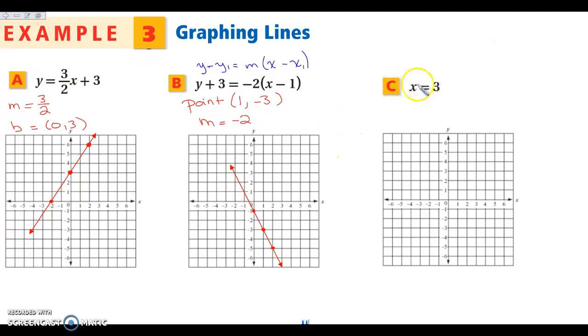Then let's look at C. We have x equals 3. That means every x value on this line is going to be 3. So I could do 3, 0. I could do 3, 3. I could do 3, negative 3.